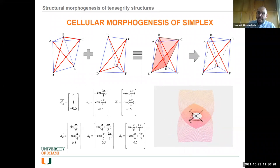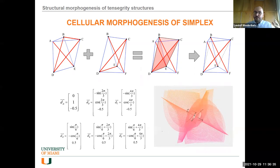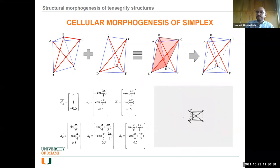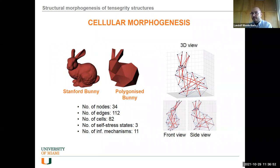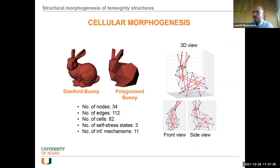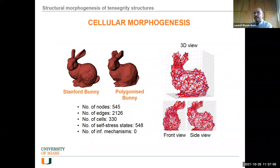While we do this for small structures, it will enable us to design large structures where we can direct the properties. We tested ourselves with the Stanford bunny — a benchmark problem in computer science. You polygonize it, take the nodes and connectivity, and define a tensegrity structure that looks like the Stanford bunny. We created both a version with disconnected compressive elements and a high-fidelity version with many more nodes, edges, and cells, combining them in a way that creates no mechanisms.